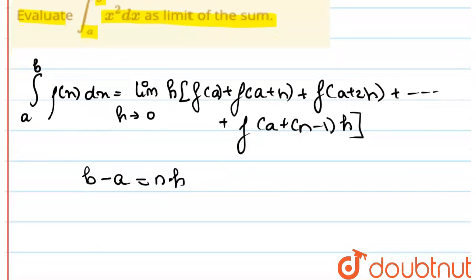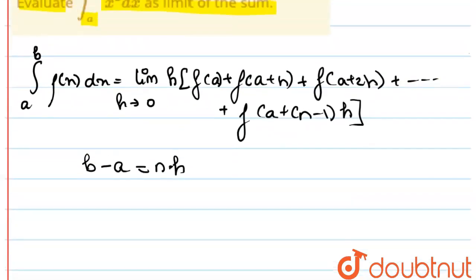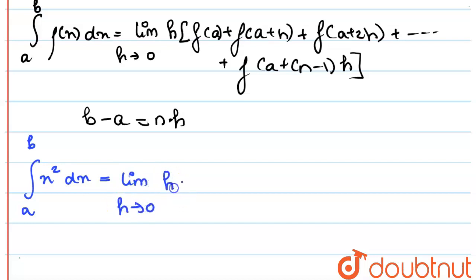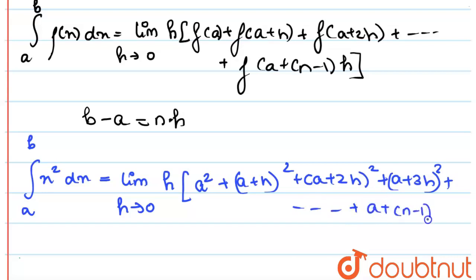Now let us put this formula into the given question. The integral from a to b of x squared dx equals the limit as h tends to 0, multiplied by h. Since it is x squared, this becomes a squared, then (a+h) squared, (a+2h) squared, (a+3h) squared, going on till (a + (n-1)h) squared.